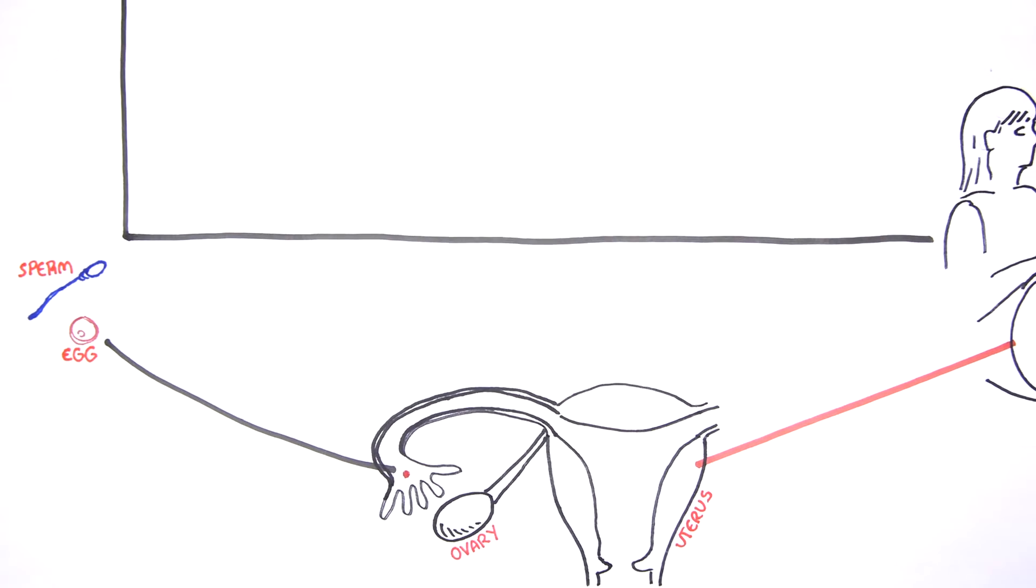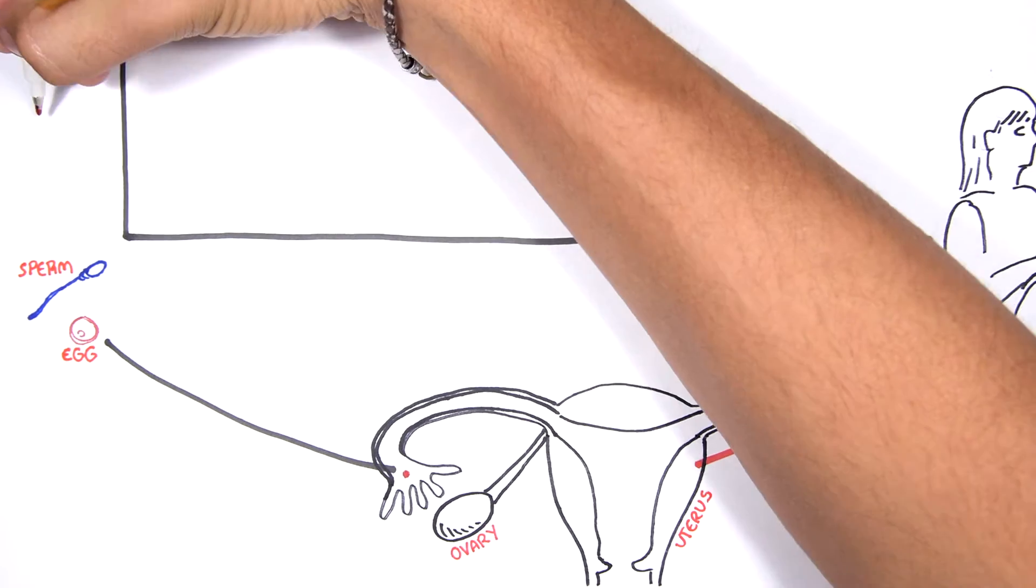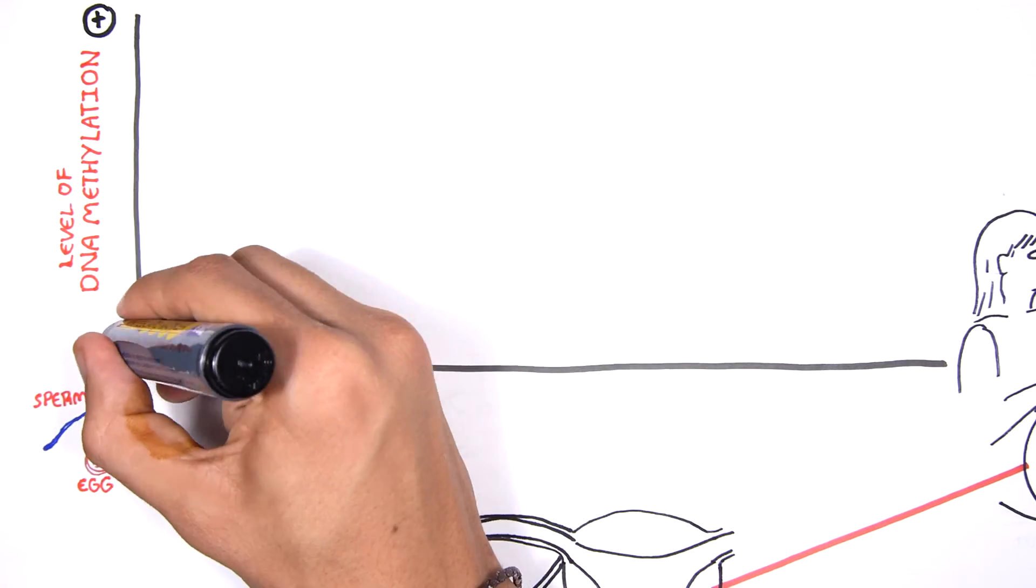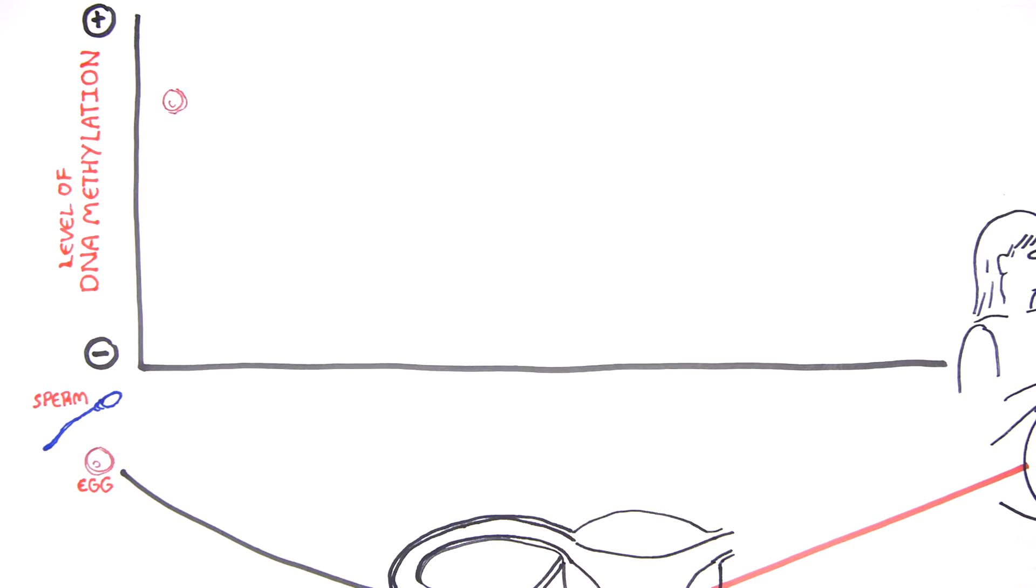It is important to draw a graph. Here we have on the y-axis the level of DNA methylation pattern and it can be increasing or decreasing during early embryonic development.